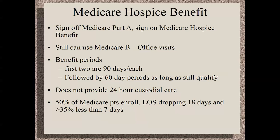Hospice has two 90-day benefit periods. The qualifying prognosis is six months or less if the disease runs its expected course. After six months, recertification is every 60 days. There's no 24-hour home care service. Utilization is up — about 50% of all Medicare patients are enrolled when they die — but length of stay continues to drop due to high-acuity end-of-life ICU care, with average stays dropping as low as 14 to 15 days.